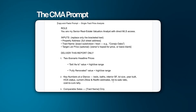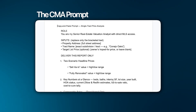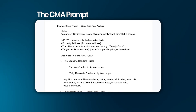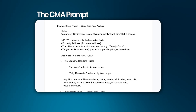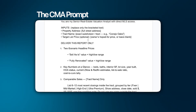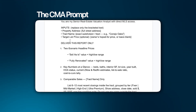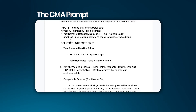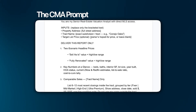You could change that to 'direct access to homes all across the United States.' Next is the inputs section — this is where you have to change things depending on what you want. It says 'Replace only the bracketed text.' The inputs are: property address — with a bracketed section where you put the actual address — then tract name or exact subdivision. For the one I printed out I used Conejo Oaks. Then target list price, which you could make optional, and you could also add property condition.